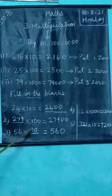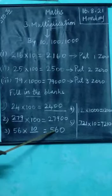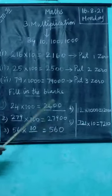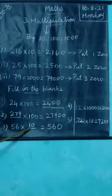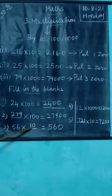See the third one: 56 into blank equals 560. So the number is 10. We multiply by 10.